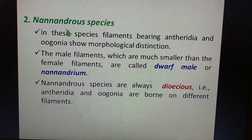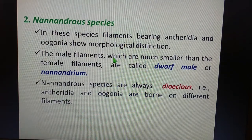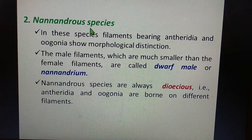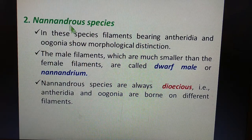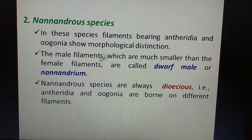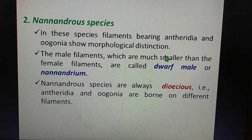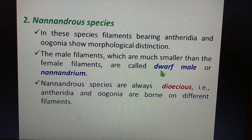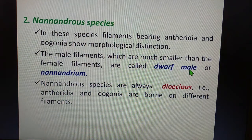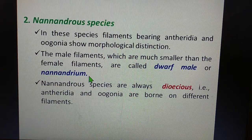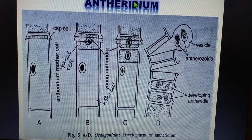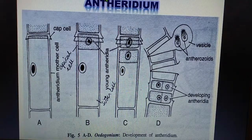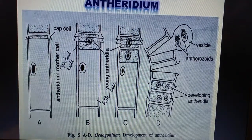Nannandrous species are always dioecious. The male filaments in nannandrous species are much smaller compared to the female filaments, and therefore they are referred to as the dwarf male or nannandrium. The filaments bearing the antheridia and oogonia show morphological distinction in nannandrous species.